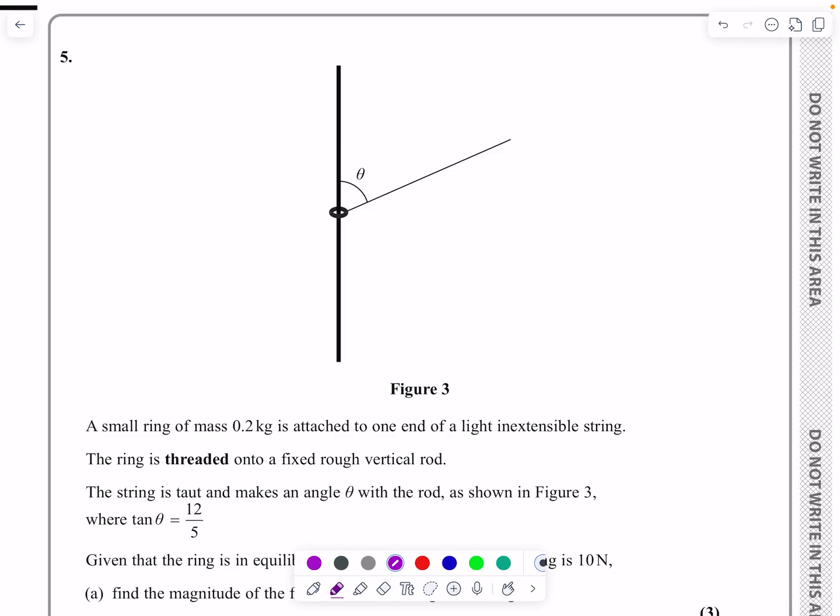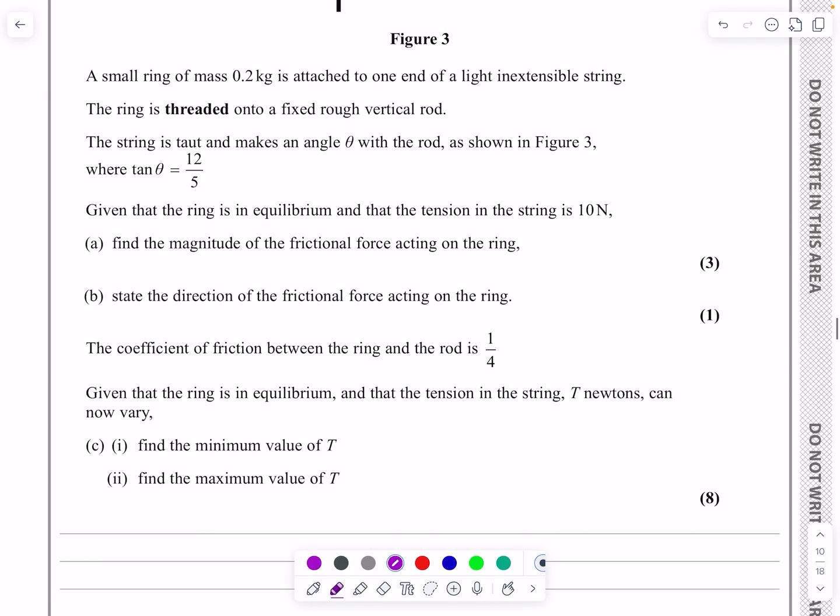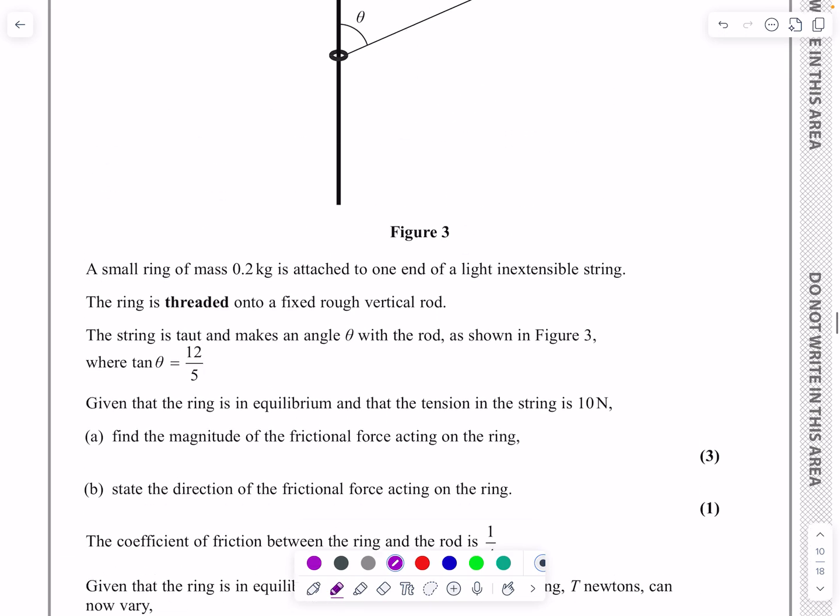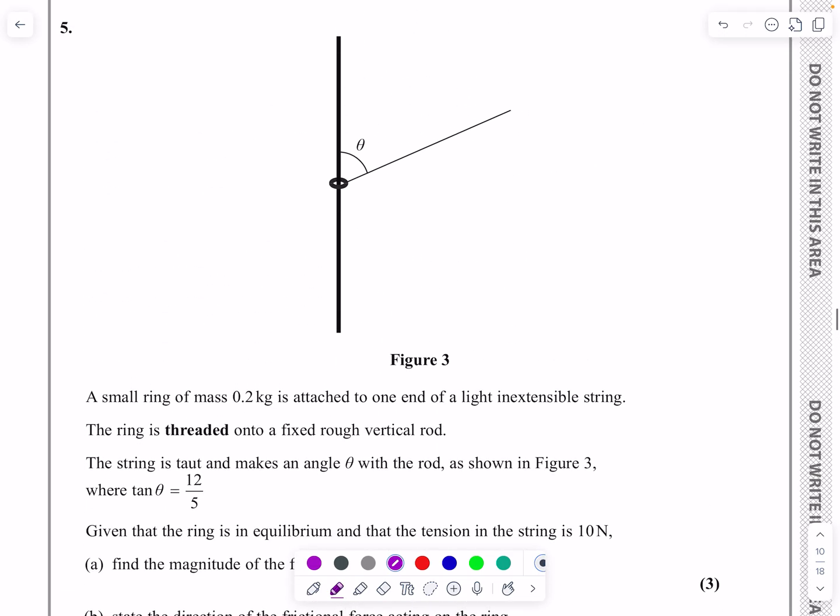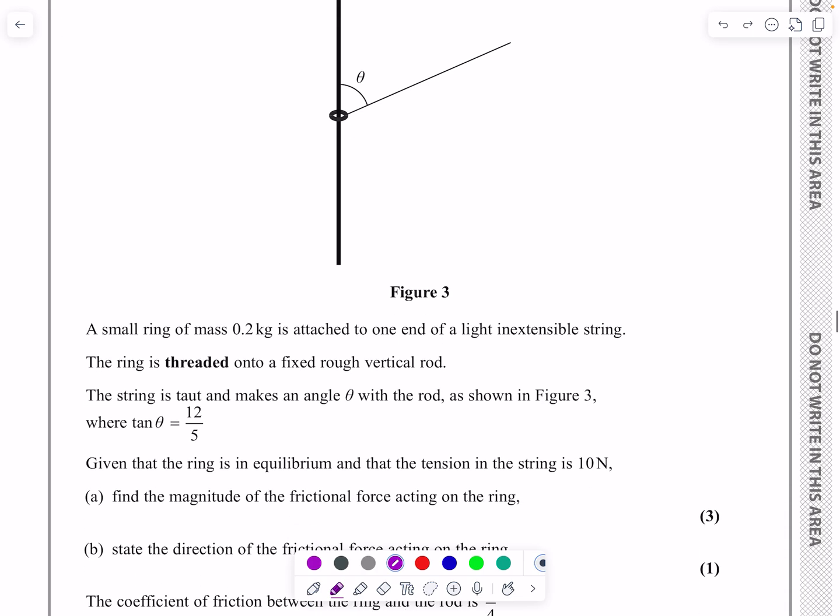Okay, this is the M1 paper from October 2023. It's question number five and if you look at it in detail we'll see this is a statics question, a quite important statics question where we've got a ring here threaded onto a rod. They're always quite difficult in terms of working out where all the forces are and also which way the ring is going to move, which way is friction going to go and that can be variable. So let's have a look at it.